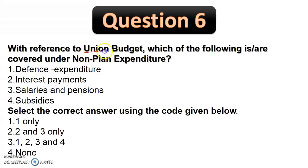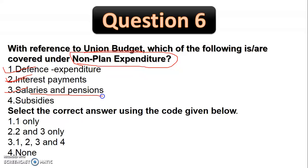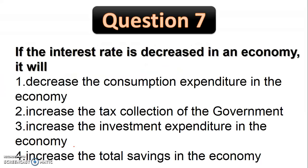With reference to the Union Budget, which areas are covered under non-plan expenditure? Those covered by the Five-Year Plan were called plan expenditure, and those that did not come under the Planning Commission were known as non-plan expenditure. Defense expenditure, interest payments, salaries and pensions, and subsidies are all non-plan expenditure. So the right answer includes options one, two, and three.